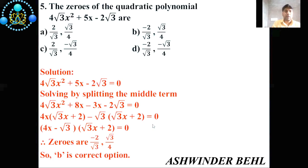Fifth question: The zeros of the quadratic polynomial 4√3x² + 5x - 2√3 are... So options are given: 2/√3, √3/4; -2/√3, √3/4; -2/√3, -√3/4; 2/√3, -√3/4. Now we'll solve this question. 4√3x² + 5x - 2√3 = 0. We will solve this question with the help of splitting the middle term.